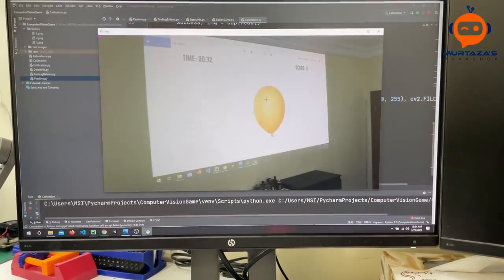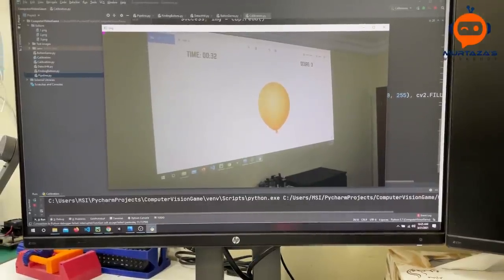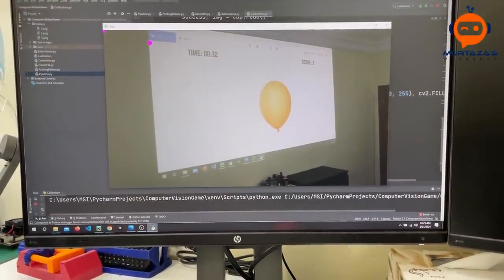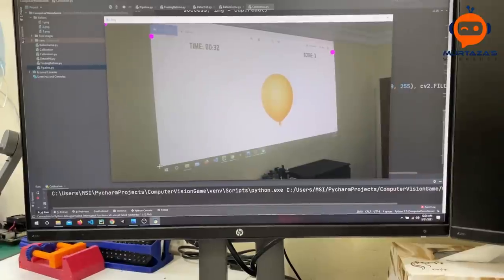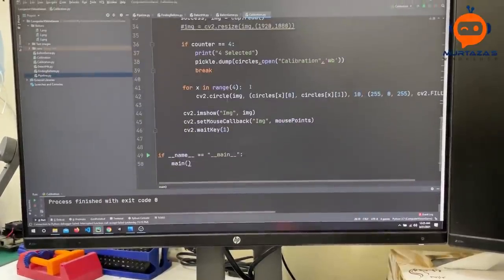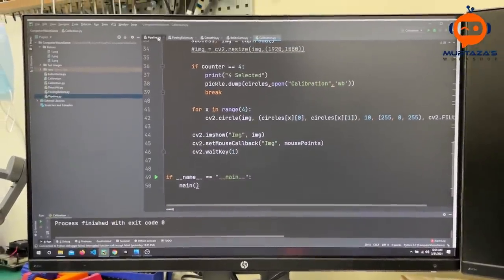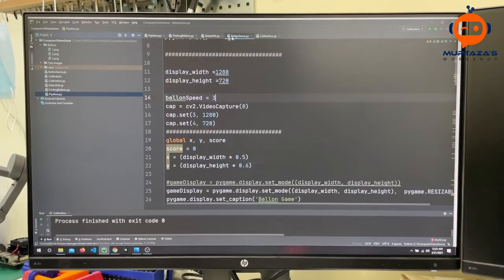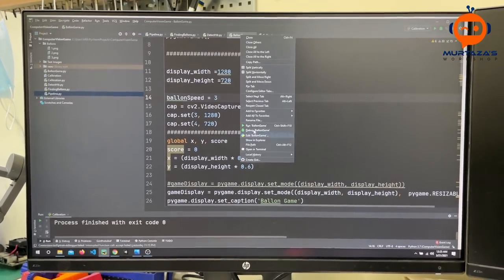We are going to run this. Let's run that again. Okay, so we need to calibrate. We will select the points. So now it's calibrated, and now all we have to do is run the balloon game.